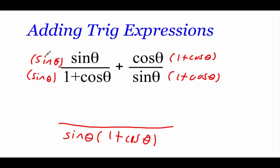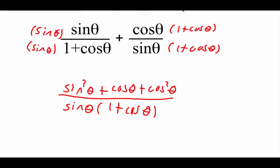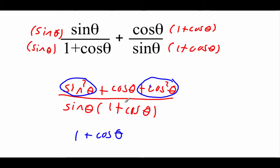Then we'll have a common denominator of sine of theta times 1 plus the cosine of theta. Looking at doing some multiplication on top: if we take sine times sine, we get sine squared of theta, and if we distribute the cosine on the right-hand side, cosine times 1 is cosine of theta, and cosine times cosine gives us cosine squared of theta. Now we're going to simplify this down, and I see one of our Pythagorean identities happening — sine squared of theta plus cosine squared of theta.